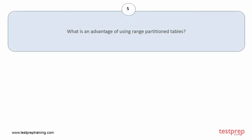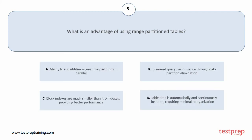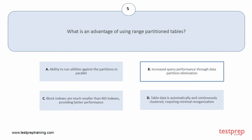Question number 5. What is an advantage of using range partition tables? Your options are: A. Ability to run utilities against the partitions in parallel. B. Increased query performance through data partition elimination. C. Block indexes are much smaller than RIT indexes, providing better performance. D. Table data is automatically and continuously clustered, requiring minimal reorganization. The correct answer is option B.